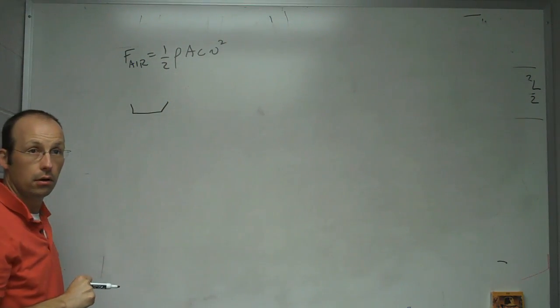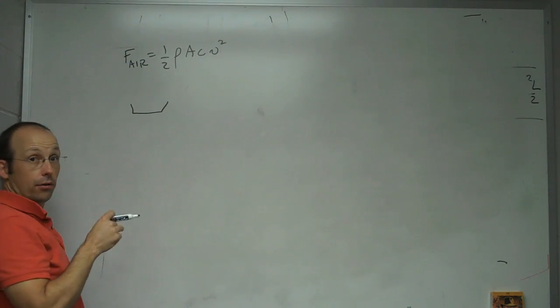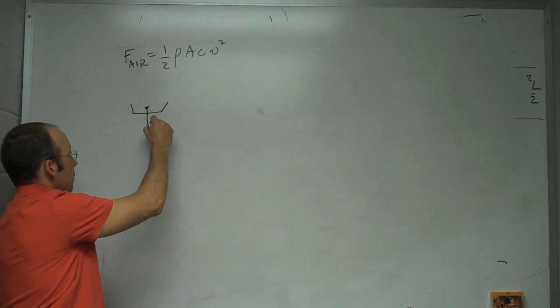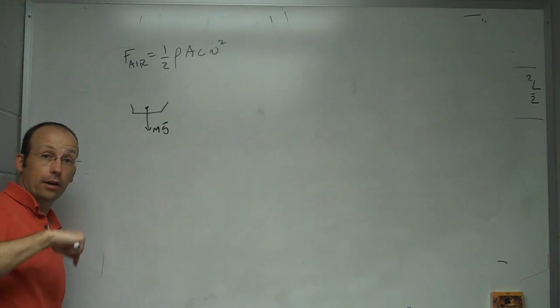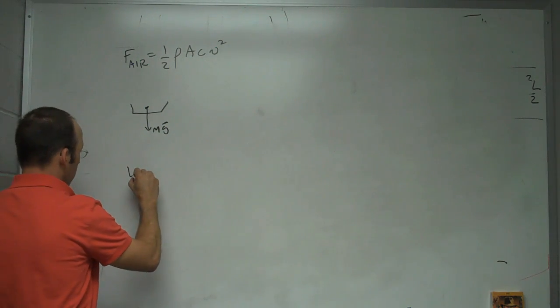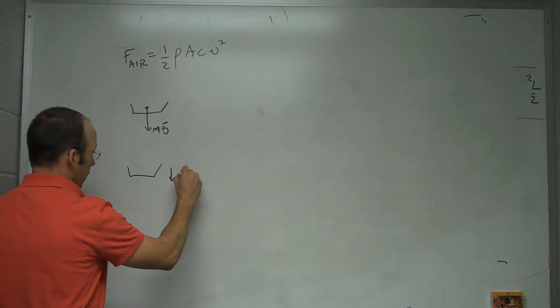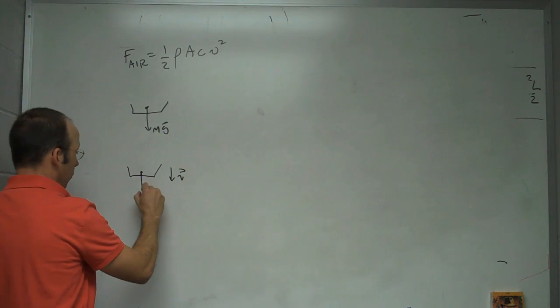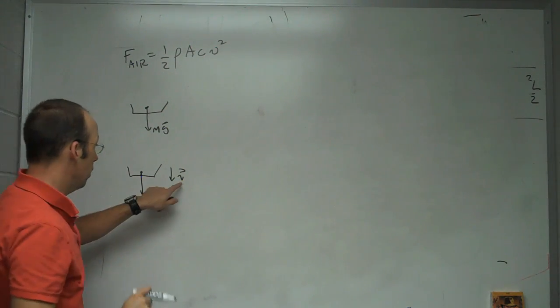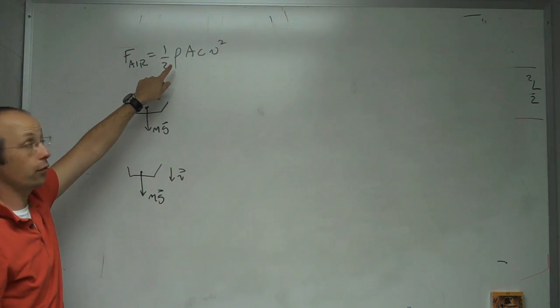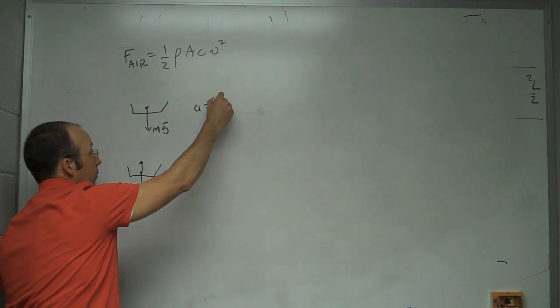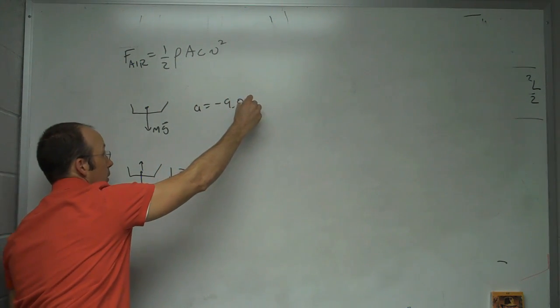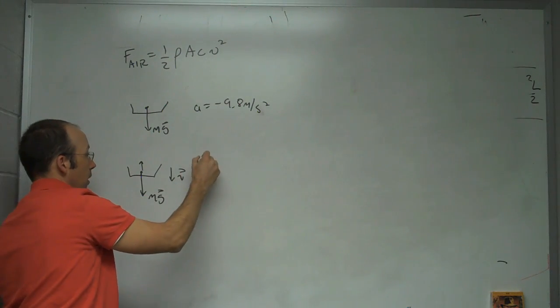Right when I let go, what happens? Well, when I let go there's a gravitational force on it. So it's going to start accelerating, it's going to start speeding up going down. And after a little bit, you'll have some velocity v. And so I'll still have the same gravitational force, but now there's a velocity so there is an air resistance force. And this is always in the opposite direction of motion, so it's going to be up a little bit like that. So say here a equals negative 9.8 meters per second squared. Here is a_y.